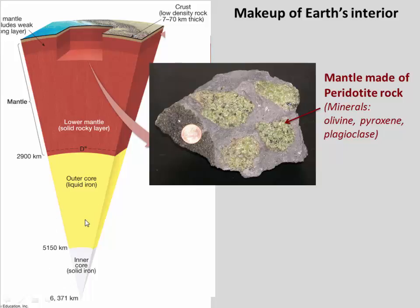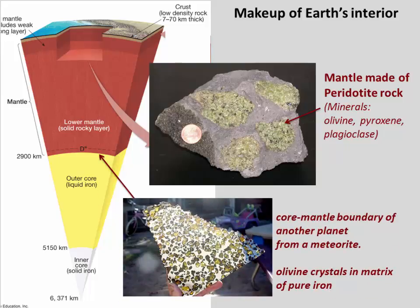What about the core — what does that look like? We have no sample of our own core, but we do have meteorites. Meteorites are chunks of rock that fall from outer space onto Earth. Some of them are called iron-nickel meteorites, like this special one here, which has a pure iron-nickel matrix with huge olivine crystals embedded in it. Scientists think this is actually a piece of the core-mantle boundary from another planet that was destroyed by an impact. This gives us confidence that our own core is probably also made of iron and nickel.